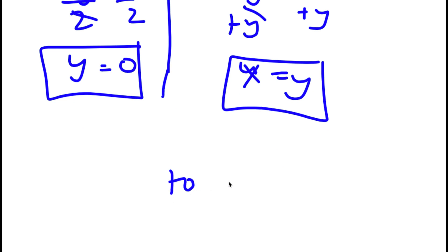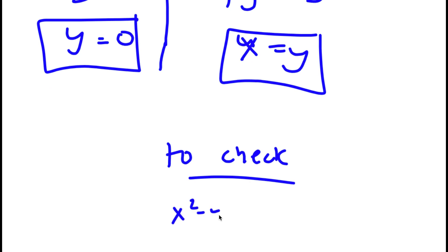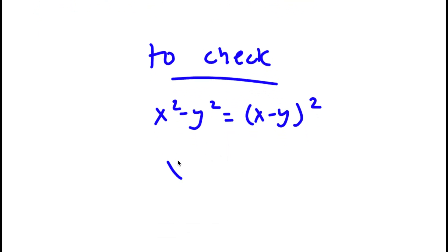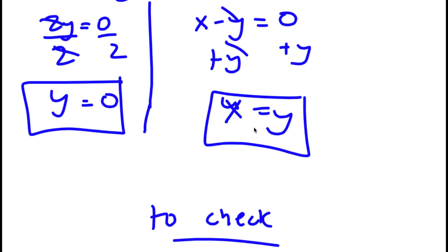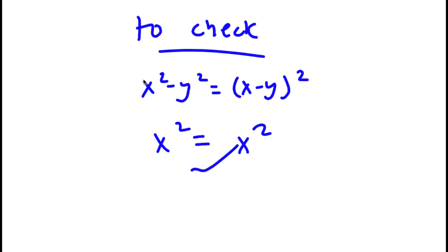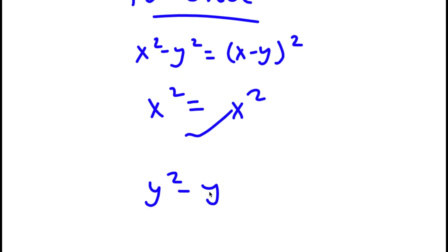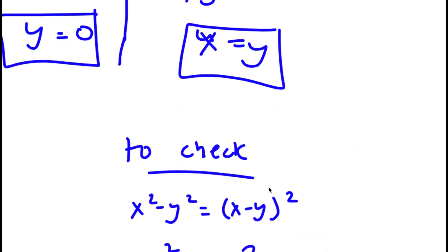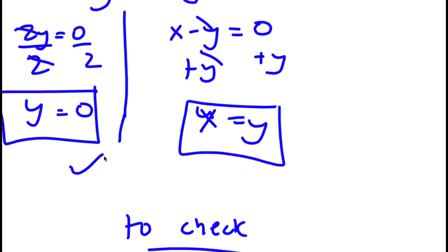Now to check: I have x squared minus y squared is equal to x minus y squared. If y equals 0, then I have x squared equals x squared — this is right. Now if x equals y, I replace x with y: y squared minus y squared equals y minus y squared. Zero equals zero squared, so 0 equals 0 — this is right as well. Both solutions are correct.